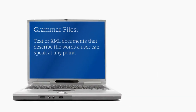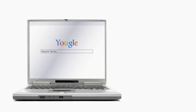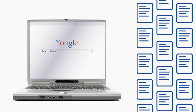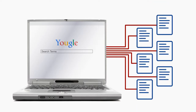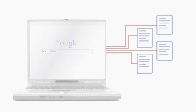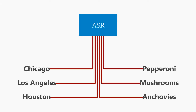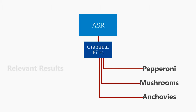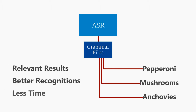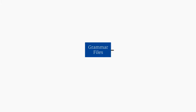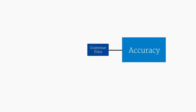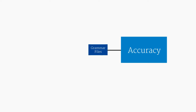You can think of an ASR like a search engine. When you type a search query into a search engine, it compares the input against a giant database of web pages and makes a prediction about the list of pages to show you. Modern search engines use a lot of data about you, such as your type of search and your location, to help narrow down their predictions and tailor the results. An ASR does the same. Grammar files help narrow down the acoustic search, providing more relevant results and giving better recognitions in less time. Because of this, smaller grammars tend to provide better accuracy. With fewer options for the ASR to choose from, there is less room for error. An important principle to keep in mind when you start developing grammars is to provide just enough coverage to handle most of the things your users are likely to say.